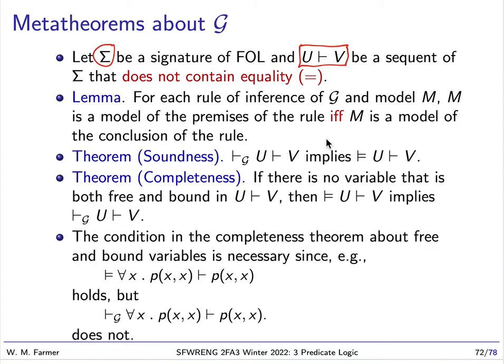Now, one thing that's true, that's actually quite useful, is that for every rule of inference of G in every model M, M is a model of the premises of the rule if and only if M is a model of the conclusion of the rule. So this is unusual. Usually we don't have if and only if, we have implies.